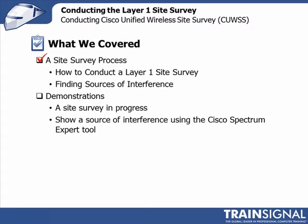What did we cover in this lesson? We started with a site survey discussion and talked about how to conduct a layer 1 site survey, how to resolve interference problems, and the expected output from a layer 1 site survey. We also covered the Cisco Spectrum Expert tool - in particular the Device Finder capability for locating interference sources. We then did demonstrations including a video of me conducting a layer 1 site survey. At the TrainSignal headquarters, the interference source I found was a microwave oven in the kitchen. I hope you enjoyed this lesson - thank you for watching.